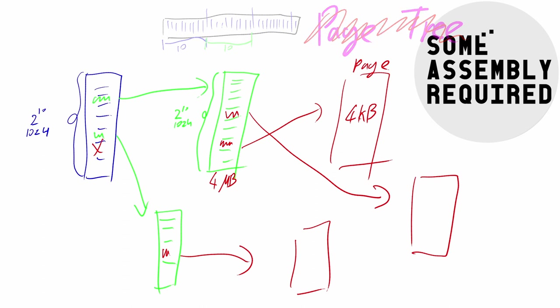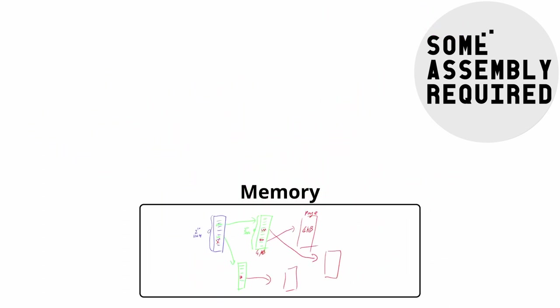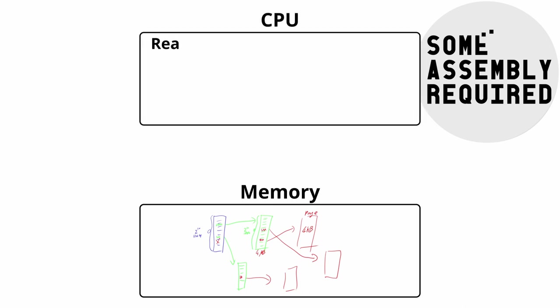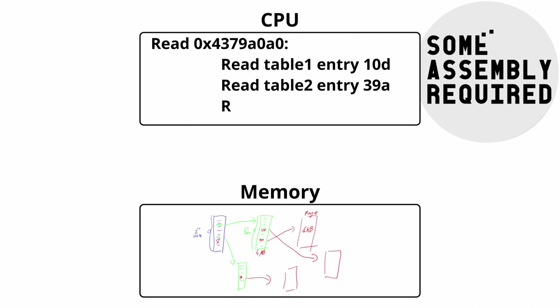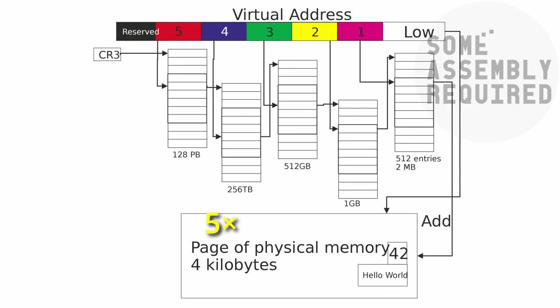The page table resides in memory. This creates a problem: if your program wants to access memory, the CPU first needs to read the page table entry to translate the virtual address to a physical one. In other words, each memory access you perform turns into multiple memory accesses the CPU needs to perform. In 64-bit mode, Intel uses a nesting level of five lookups each of 9 bits — and even that only adds up to 57 bits, not the full 64.